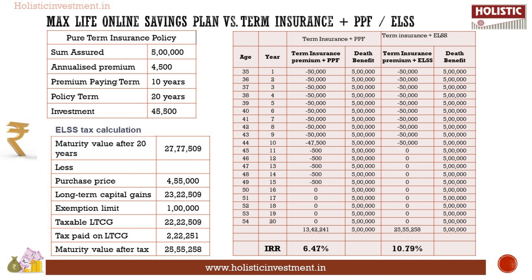For the equity instrument, we have chosen ELSS. In the first 10 years, after paying the pure-term insurance premium, the balance goes into the ELSS fund. For the next 10 years, the fund grows without any investments. At the end of 20 years, the fund value is subject to tax. Under mutual fund ELSS, the pre-tax maturity value is Rs. 27.77 lakhs. After the deduction of capital gains tax, the final maturity value is Rs. 25.55 lakhs. The IRR is 10.79%, which is a post-tax return. This rate is far above the inflation rate. Any long-term investment return beating inflation comfortably can help in meeting your goals.